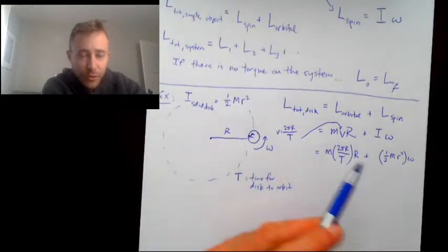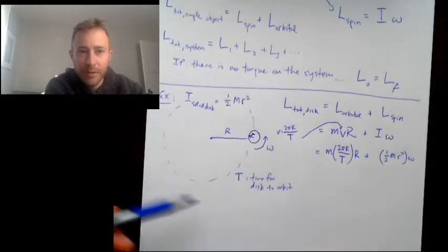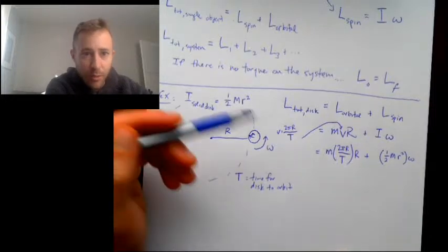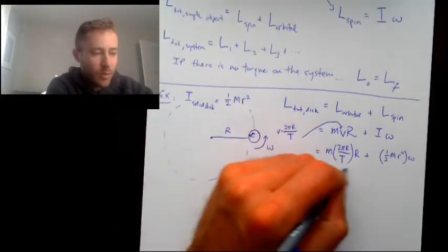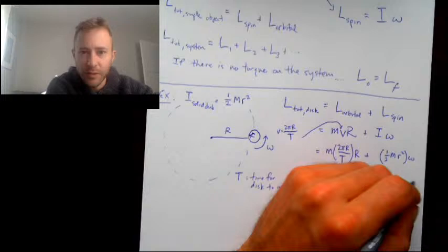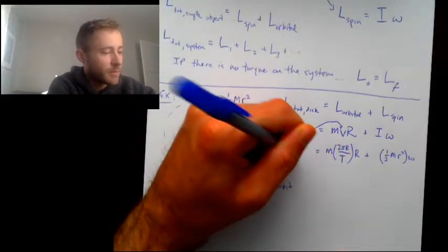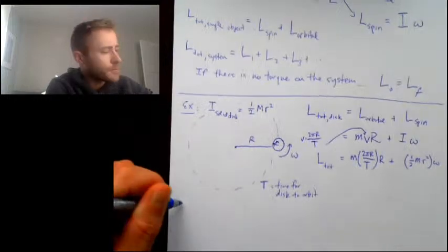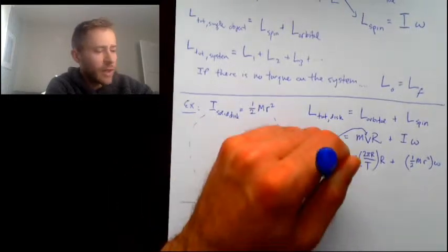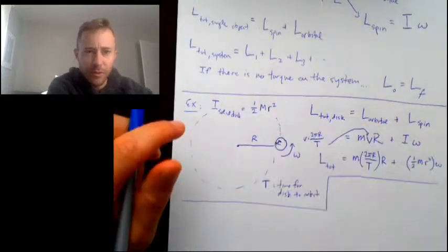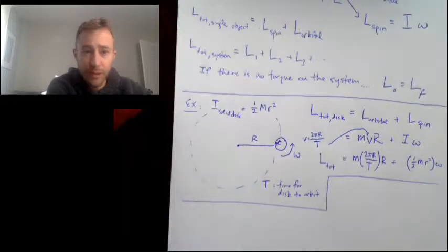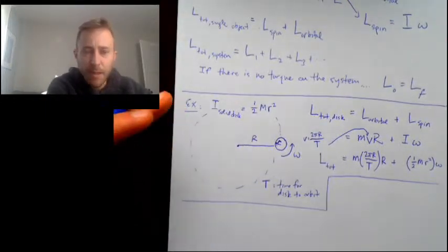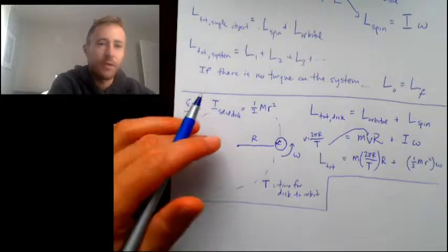So what I've basically done here is shown you all the components of calculating the total angular momentum of a spinning and orbiting object — orbital angular momentum and spin angular momentum. That example doesn't really have to do with conservation of angular momentum, so let's talk about conservation of angular momentum.